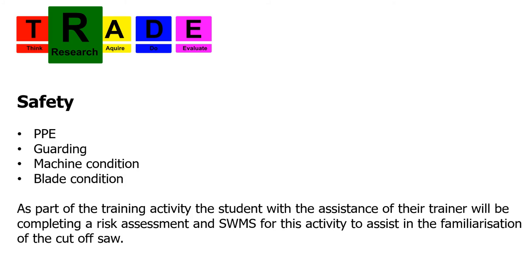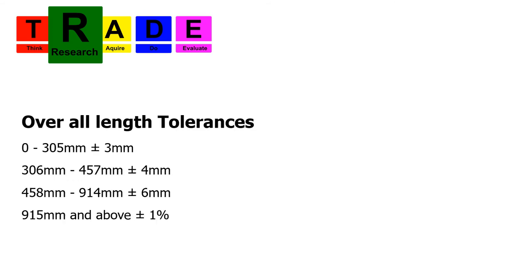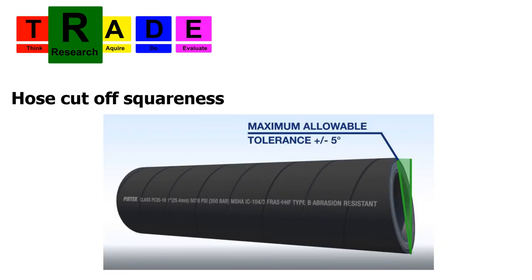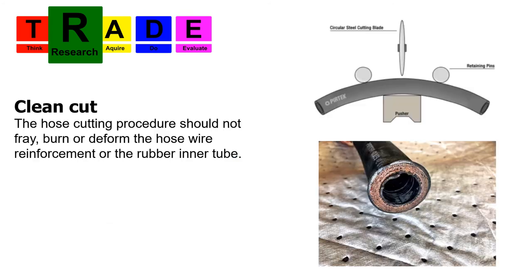The first objective is safety — correct PPE, guarding on the machine, machine condition, and blade condition. The student will be required to create a risk assessment and safe work method statement for this machine as part of their induction and training process. Another critical skill is maintaining the overall length tolerances when cutting hoses. Another is making sure the hose is cut square — within plus or minus five degrees. Another critical feature is having a clean cut: the procedure should not fray, burn, or deform the hose wire reinforcement or the rubber inner tube.